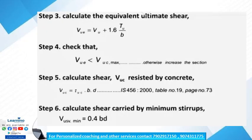Calculate the shear Vuc resisted by concrete using tau_c × b × d, as per IS 456:2000 Table 19. Then calculate the shear carried by minimum stirrups as 0.4 × b × d.